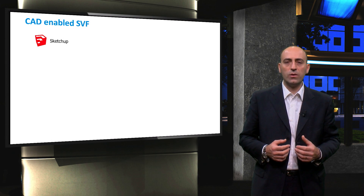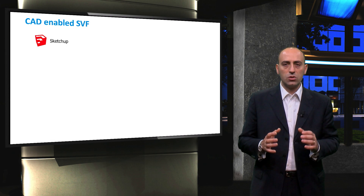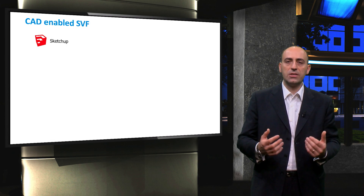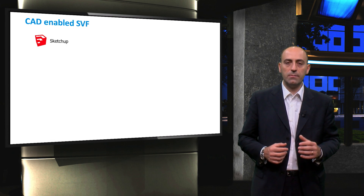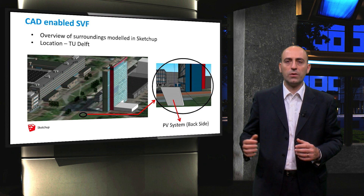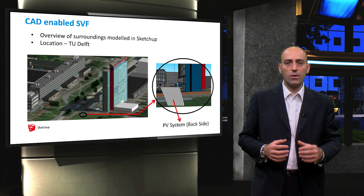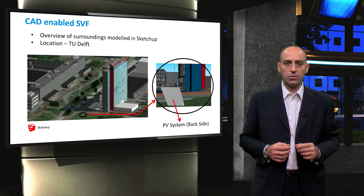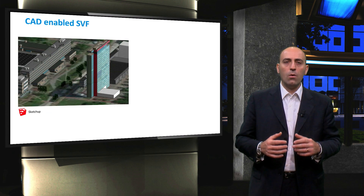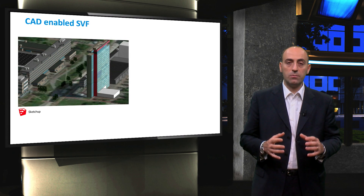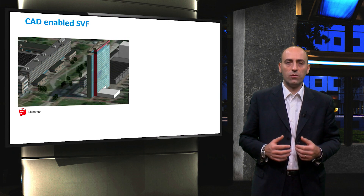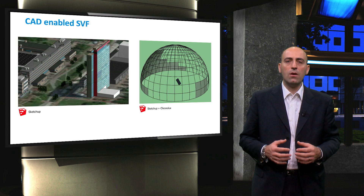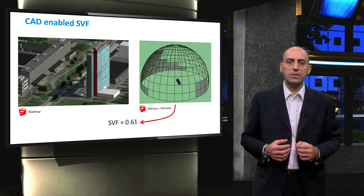The CAD-enabled approach is used to determine a more realistic SkyView factor that takes the surroundings also into account. In such an approach, a CAD software such as SketchUp will be used. After choosing the necessary location of the PV system, a comprehensive modeling of the surrounding landscape along with the PV system is carried out. For example, the figure shown here is a 3D model created in SketchUp for a certain location inside the TU Delft campus. Once the PV system and the surrounding environment are modeled, a plugin called LSS-Chronolux can be used to calculate the SkyView factor for the modeled landscape. With this method, for the above location in TU Delft, the SkyView factor of the PV system was found to be 0.61.